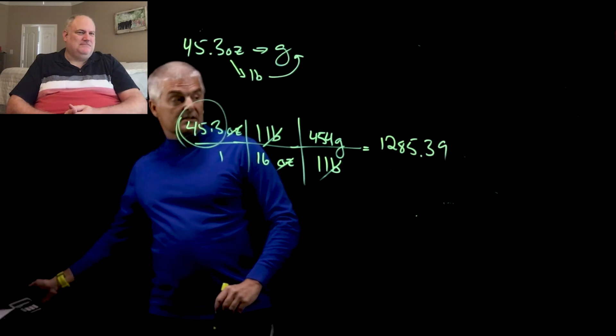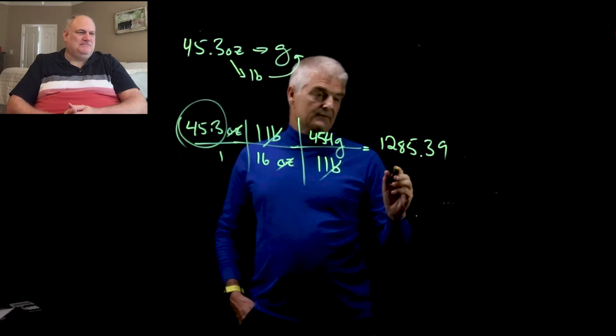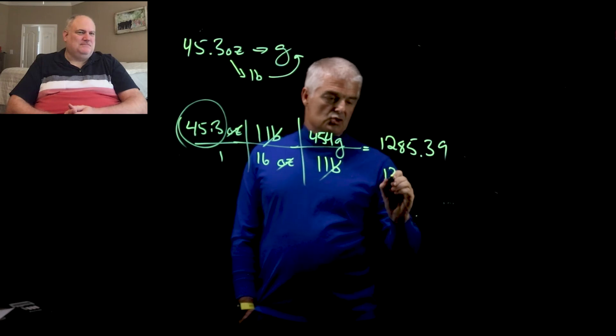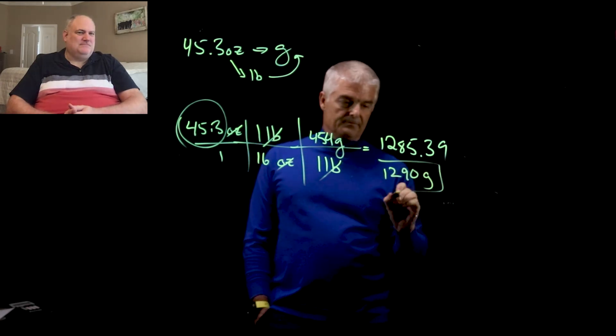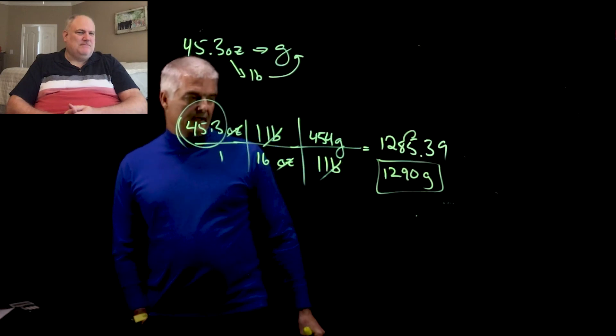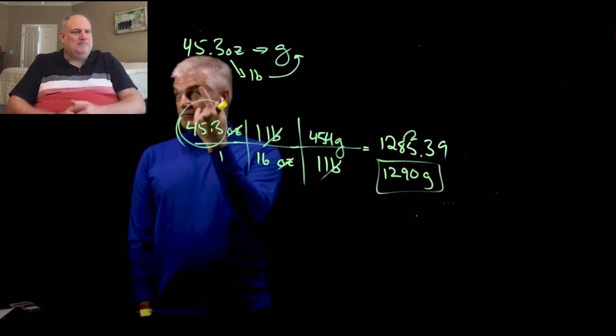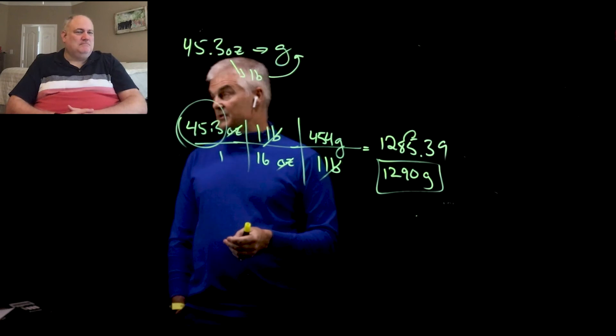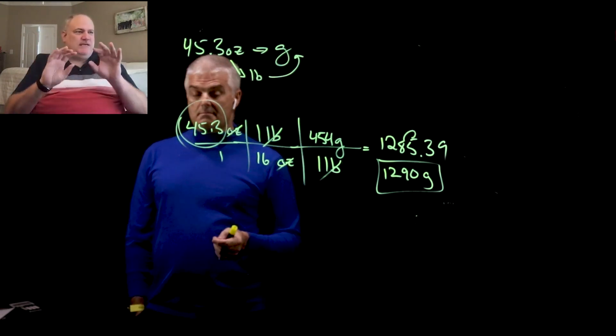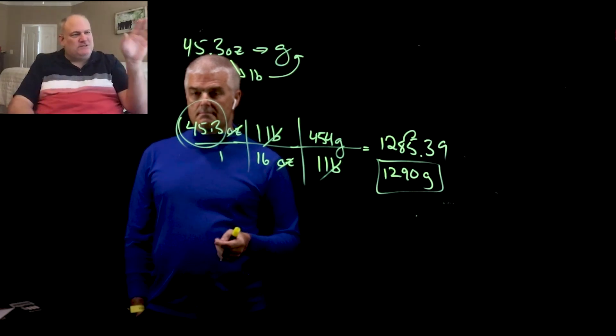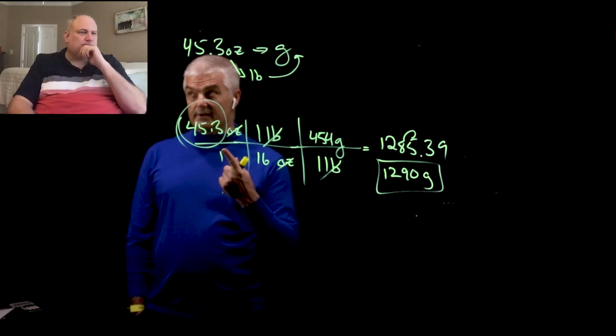Like Mr. Demetrius said, we've got three significant digits. We're going to round this to three significant digits. So, that's going to be 1,290 grams, the five rounds the eight up. Anything else from this content that we need to do? No. Just make sure that you, whenever you're setting up your tables, that you're setting up to cancel. And that you write the conversions exactly as they're written. That's right.